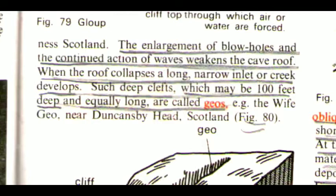The enlargement of blowholes and the continued action of waves weakens the cave roof, and the roof collapses and a narrow inlet or creek develops. Such deep clefts, which may be 100 feet deep and equally long, are called geos. For example, the Whaligoe Geo near Duncansby Head, Scotland.